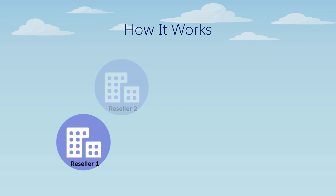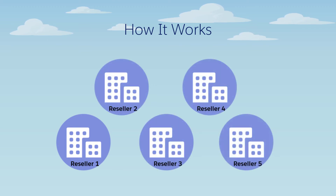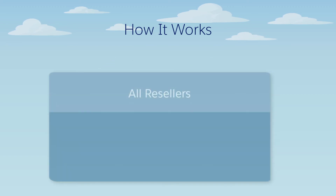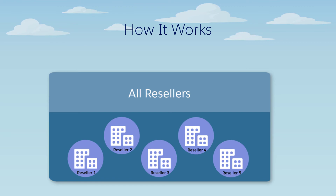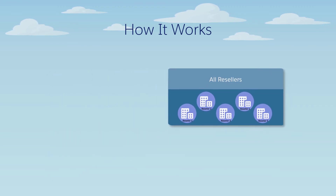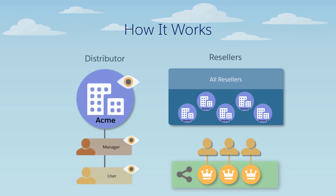What if Acme needs similar access to opportunities of all the resellers they do business with? First, the Pacifica admin creates a public group that includes all the reseller accounts and their users. Then, she edits the sharing rule on the opportunity object that gives Acme users read-write access to opportunities owned by users in the reseller group. Acme account users can now access all the opportunities owned by all the resellers.